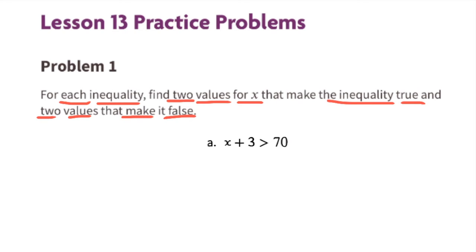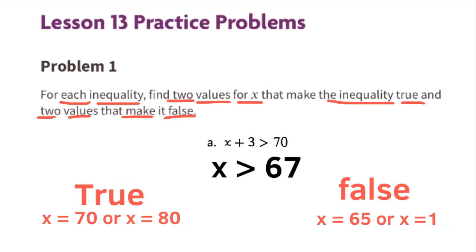Part a: x plus 3 is greater than 70. Subtract 3 from both sides of the inequality sign, and that leaves you with x is greater than 67. Values for x that would make the inequality true would be anything larger than 67 — for example, x could equal 70 or x could equal 80.